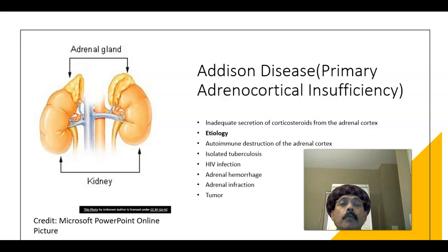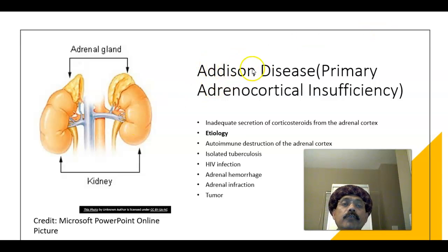Hello, my name is Dr. Dewan S. Raja. Today I will discuss Addison's disease, also called primary adrenocortical insufficiency.